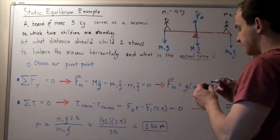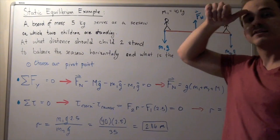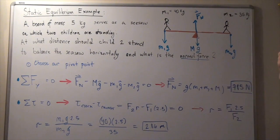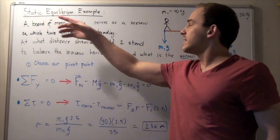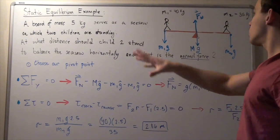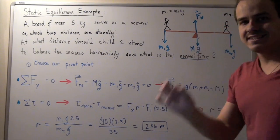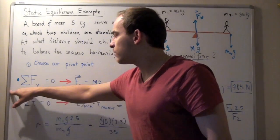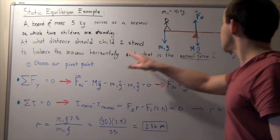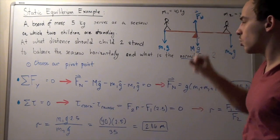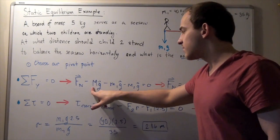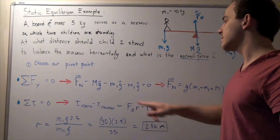Let's choose upward as positive and downward as negative. There are no forces along the x-direction, only along y. Because we assume static equilibrium, all forces going up equal all forces going down, so the sum of all forces in the y-direction equals zero. Writing this out: F_normal minus M_board times G minus M1 times G minus M2 times G equals zero.